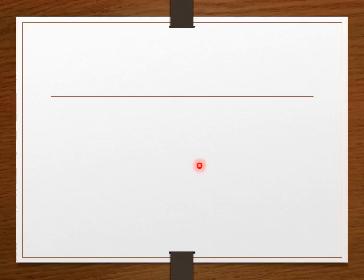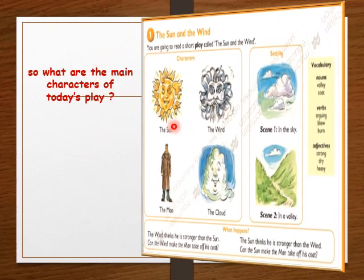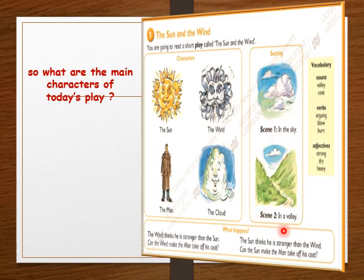What are the main characters of our play? We have the sun, the wind, the man, and the cloud. For the setting, the first scene is in the sky and the second part is in a valley. A scene is a part of a play — each play is divided into many parts. So we have two scenes here.